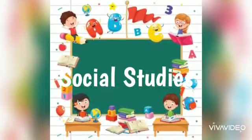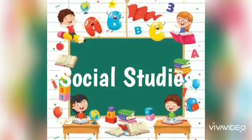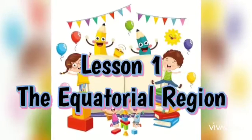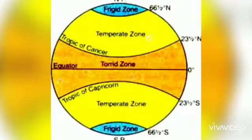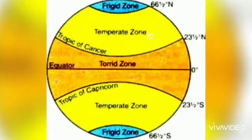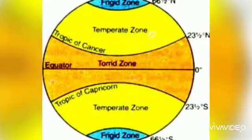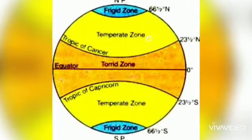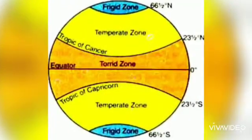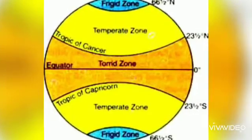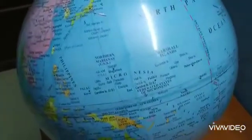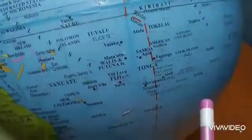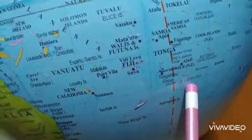Assalamu alaikum, dear children. We can begin our Social Studies class. Our first lesson is the equatorial region. Children, hope you have learned the temperature zones of the world. Can you see which are the temperature zones? Yes, the torrid zone, the temperate zone, and the frigid zone. So there are three temperature zones. This is the globe.